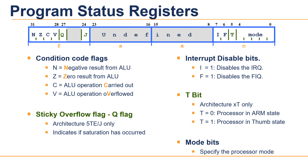The processor contains 1 CPSR and 5 SPSRs for the exception handlers to use. The program status registers hold information about the most recently performed ALU operation, control the enabling and disabling of interrupts, and set the processor operation mode to either Thumb mode or ARM mode. Each register is 32 bits long.